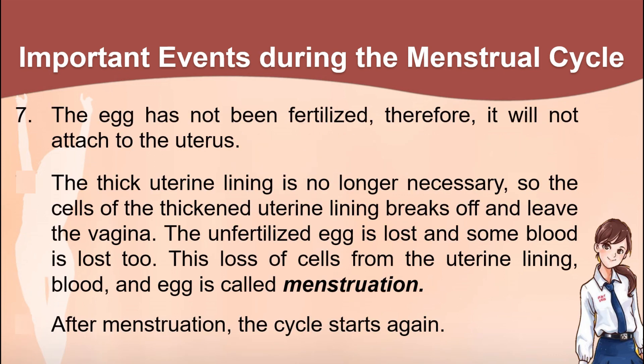7. The egg has not been fertilized; therefore, it will not attach to the uterus. 8. The thick uterine lining is no longer necessary, so the cells of the thickened uterine lining break off and leave the vagina. The unfertilized egg is lost and some blood is lost too. This loss of cells from the uterine lining, blood, and egg is called menstruation. 9. After menstruation, the cycle starts again.